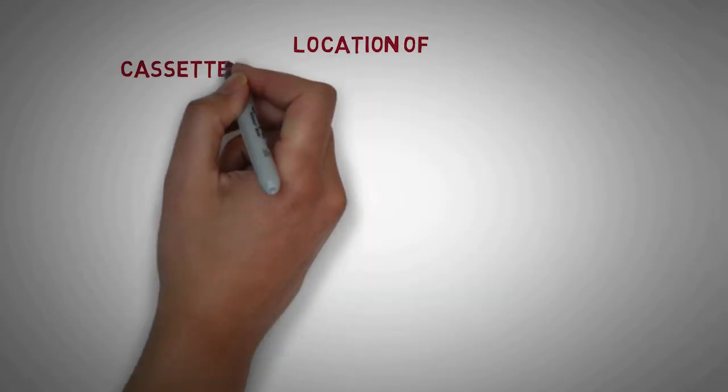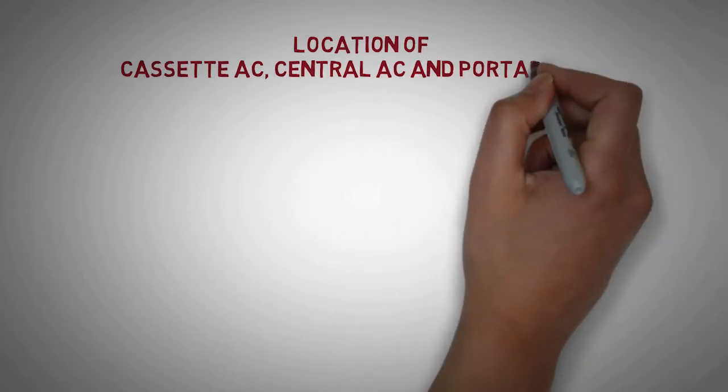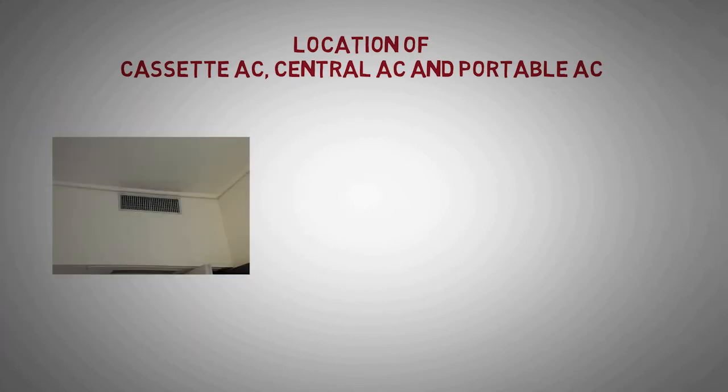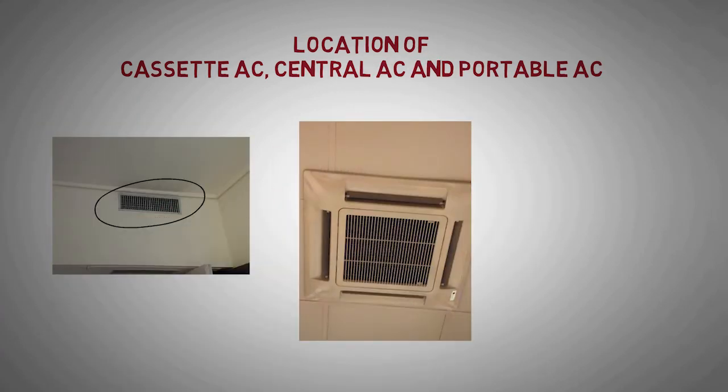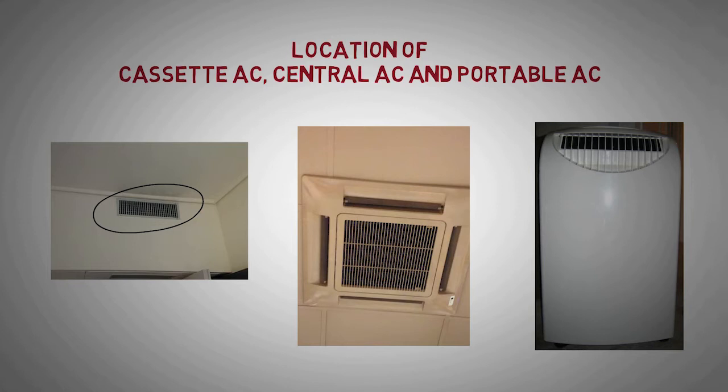Location of cassette AC, central AC and portable AC: Central AC and cassette AC are mounted on the ceiling, whereas portable AC are movable. So the chilling effect of these AC are not that much dependent on their location. Here in this video, we will discuss the best location for split AC and window AC.